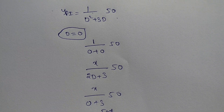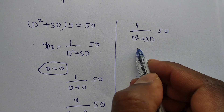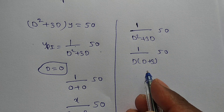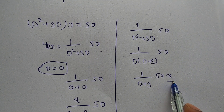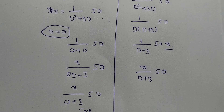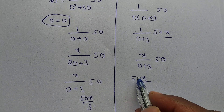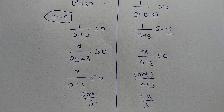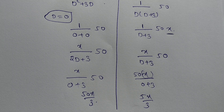We can verify with another method: 1/(D²+3D) · 50 = 1/[D(D+3)] · 50. Since 1/D means integration, we integrate: integral of 50 dx = 50x. Then we get x/(D+3) · 50. Putting D = 0: 50x/(0+3) = 50x/3. Both methods give the same answer. This is Type 1 — whenever q(x) is a constant. Thank you for watching.